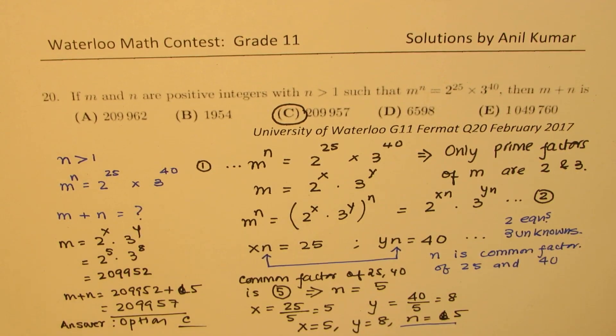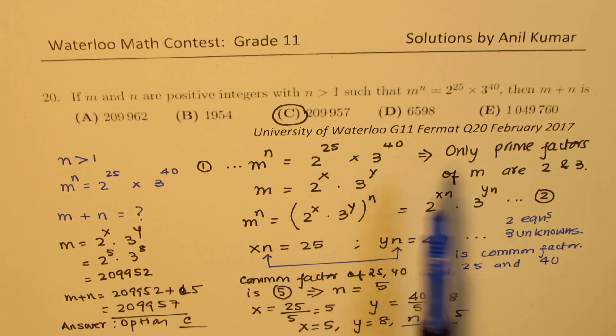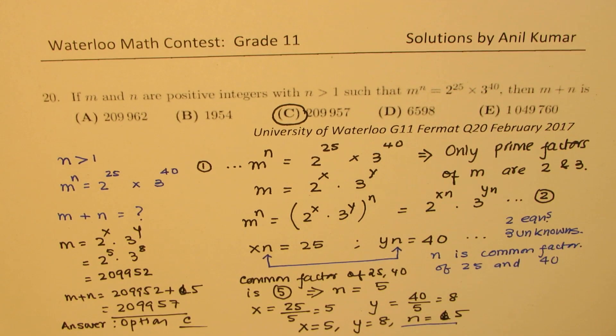So I hope that makes sense. So the idea here is to work with the exponents as we have shown here. So identifying that these are the only prime numbers and then work on the algebra part, we can actually solve this question. I hope that makes sense. Feel free to write your comment, share your views, and if you like and subscribe to my videos, that'd be great. Thanks for your time and all the best.